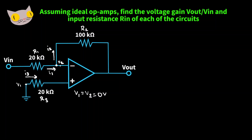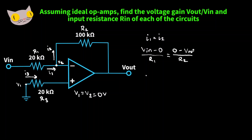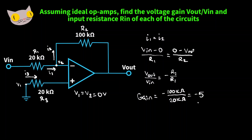Applying Kirchhoff's current law at node V2, I1 equals I2. I1 equals V_in minus V2 (zero) over R1, and I2 equals V2 (zero) minus Vout over R2. Rearranging gives Vout over V_in equals negative R2 over R1, so our gain is negative 100k ohms over 20k ohms, giving us a voltage gain of negative 5 once again.